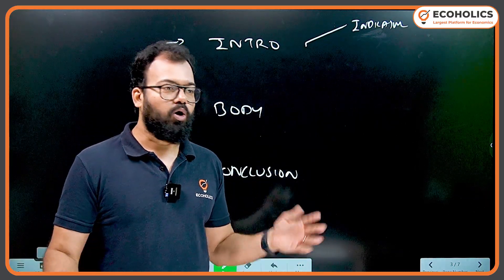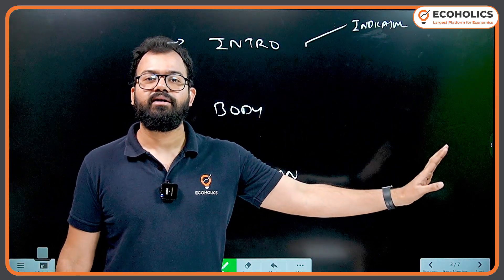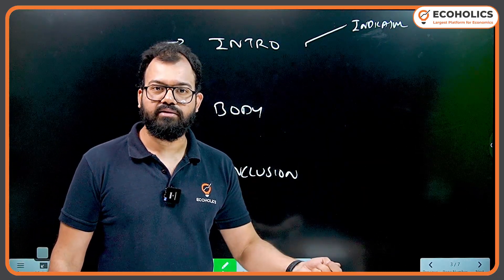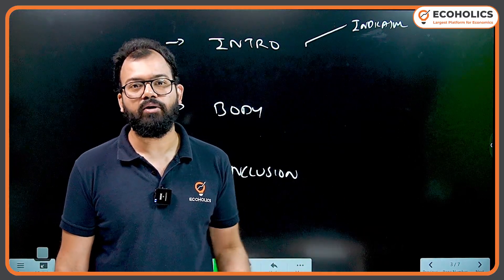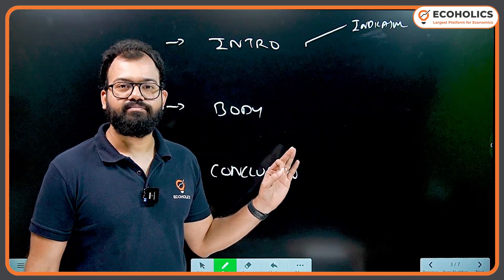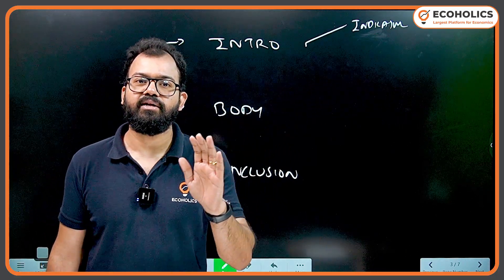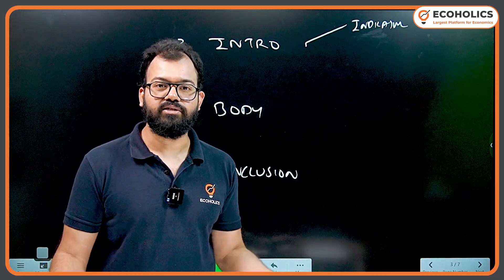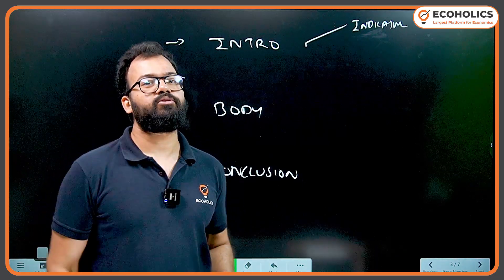You can write that although MGNREGA was successful because rural unemployment is homogeneous in nature, in urban areas a person pulling a rickshaw is employed but a person with a PhD can be unemployed, so the same scheme cannot work. The introduction can be: MGNREGA was successful in rural areas but there may be several challenges implementing it in urban areas because the nature of unemployment in urban areas is heterogeneous.